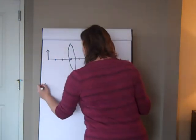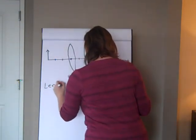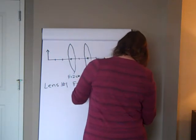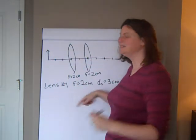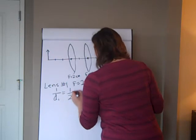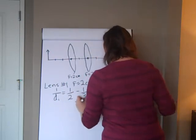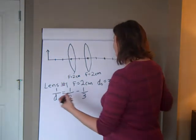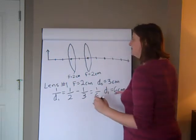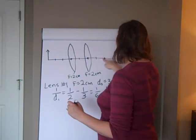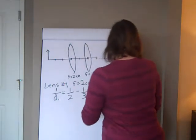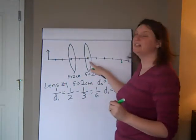So we're going to do lens number one. The focal point is two centimeters, the distance is three centimeters. Just like I did on the last lesson: distance of image equals one over the focal length minus one over the distance, which is three-sixths minus two-sixths equals one-sixth. The image is at six centimeters, which means six centimeters behind the lens. I'm going to put a little mark. Six centimeters is where the image would be if this lens wasn't here.